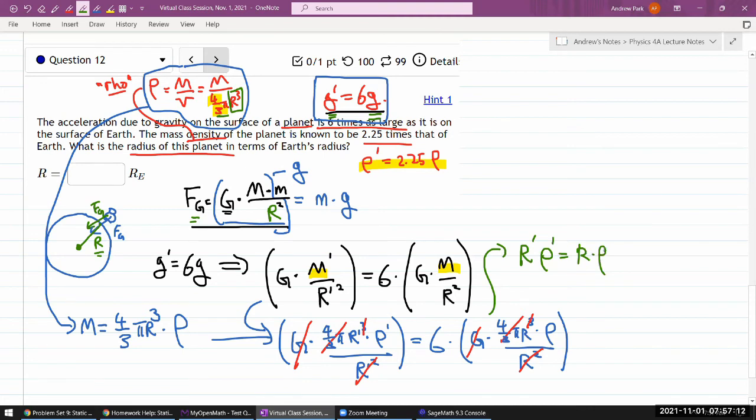This is the place where we put in this information. I can replace rho prime with 2.25 rho. So r prime times 2.25 rho is equal to 6 r times rho. Rho's cancel out because we are expressing things in terms of the Earth quantities. And I can solve for this radius of the planet. And I get radius of the planet is equal to 1 over 2.25 times the radius of Earth. I just moved it over.